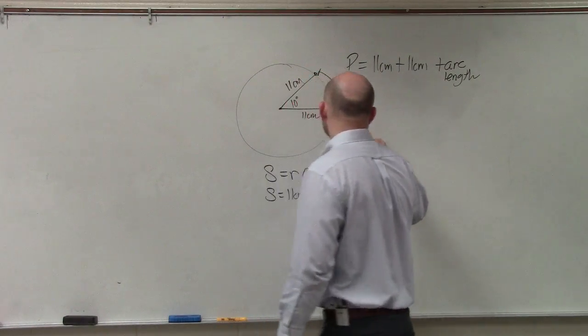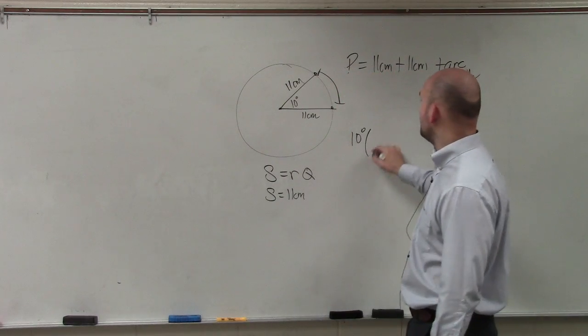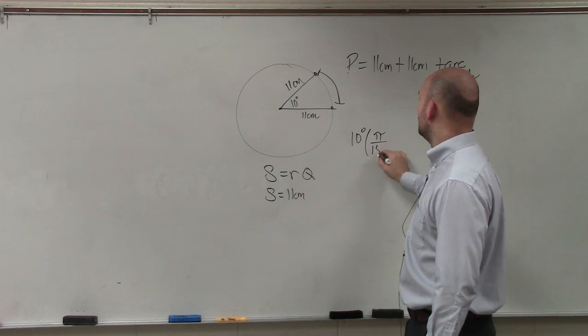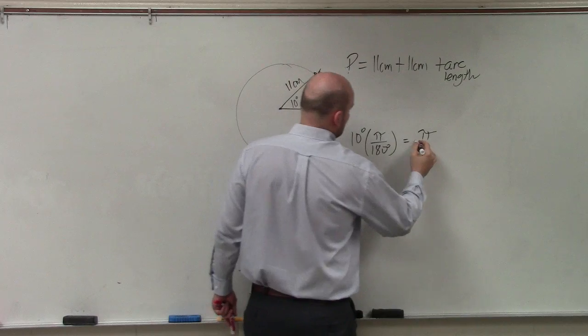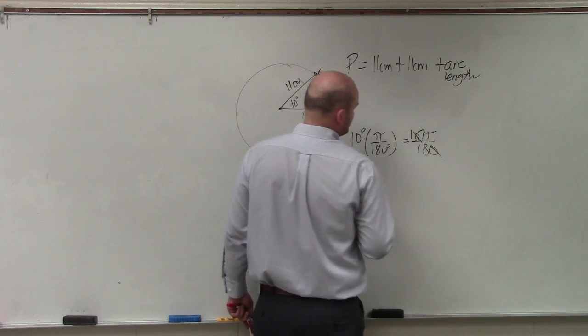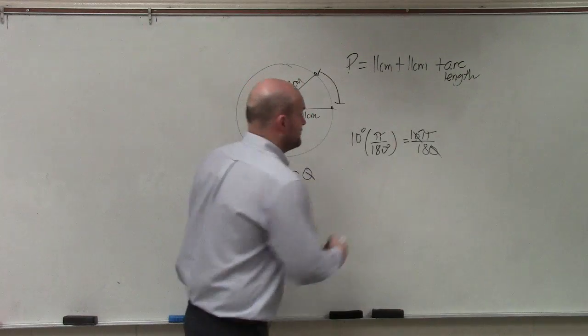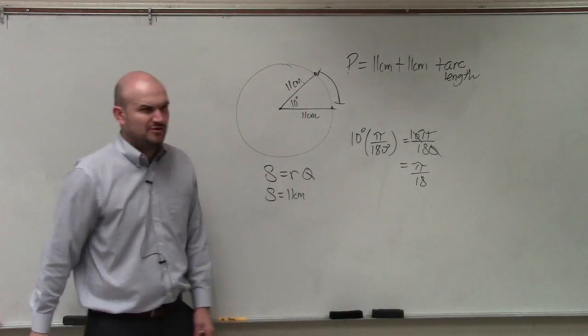So our theta is 10 degrees. We need to put that into radian form. Therefore, I'm going to multiply it by pi over 180. So it's 10 pi over 180, which simplifies to pi over 18. Does everybody agree with me how I got that?